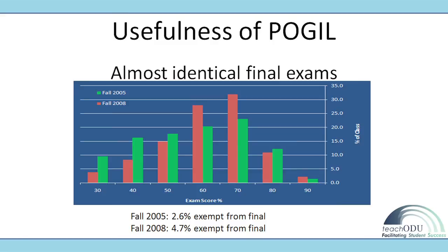This is from my own class. The green bars are when I was teaching organic with lecture; the red bars are when I started using POGIL. These were identical final exams. The A's and B's didn't change much, but there was a significant shift of students who had been scoring in the 30s, 40s, and 50s up into the 60s and 70s — really moving students who weren't doing well into passing range. I also had many more students qualifying for exam exemption with POGIL than with lecture alone.